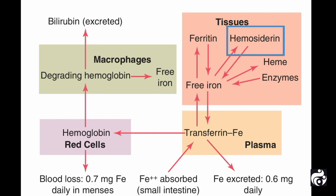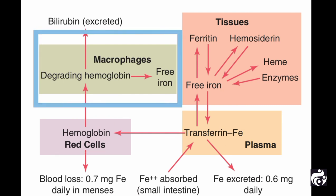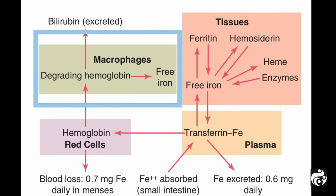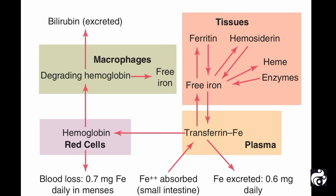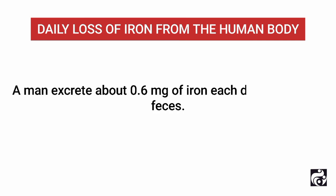Smaller quantities of iron in the storage pool are in an extremely insoluble form called hemosiderin. When the red blood cells have lived their lifespan of about 120 days and are destroyed, the hemoglobin released from the cells is ingested by monocyte macrophage cells. There the iron is liberated and is stored mainly in the ferritin pool to be used as needed for the formation of new hemoglobin.